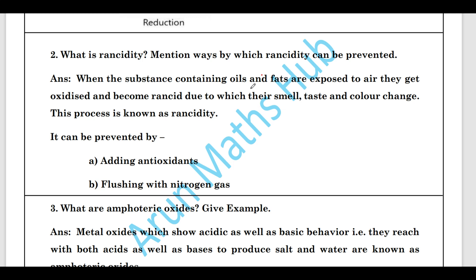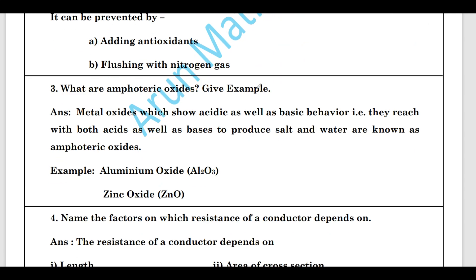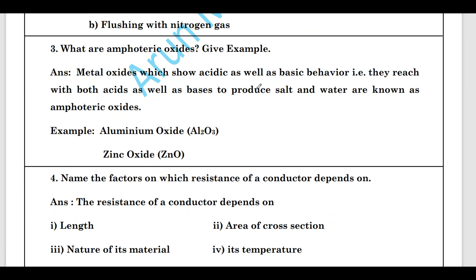Third question: What are amphoteric oxides? Give an example. Metal oxides which show both acidic and basic behavior — that is, they react with both acids and bases to produce salt and water — are known as amphoteric oxides. Examples are aluminum oxide and zinc oxide.